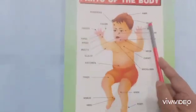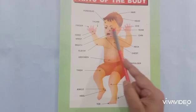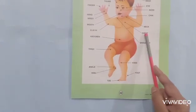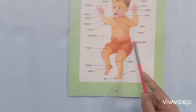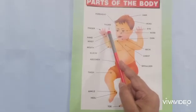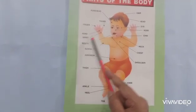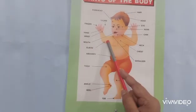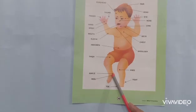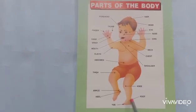Hair, Head, Eye, Nose, Chin, Neck, Chest, Shoulder, Forehead, Thumb, Finger, Hand, Wrist, Mouth, Elbow, Abdomen, Thigh, Ankle, Heel, Knee, Foot and Toe.